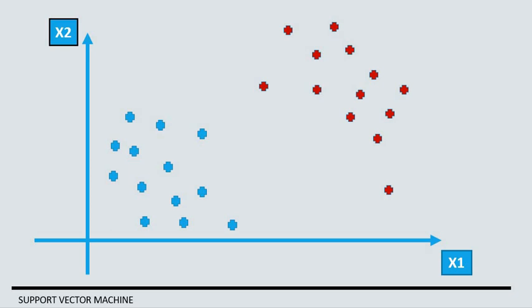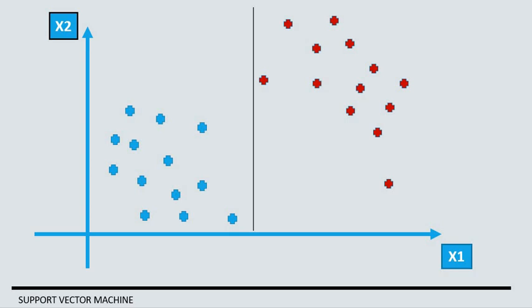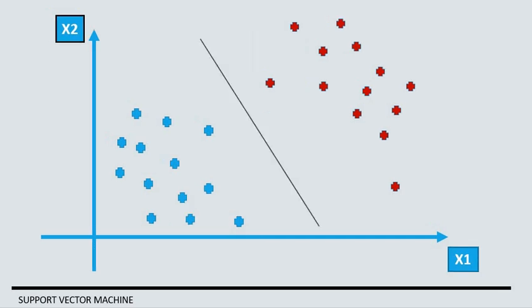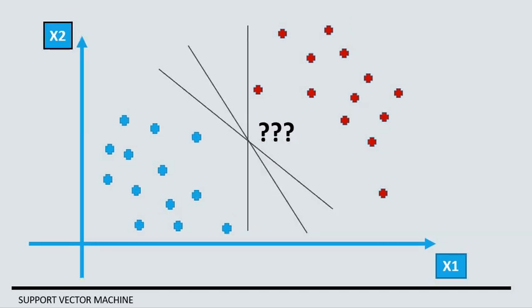But then what makes that line so special? Why can't I separate it in that way or this way? So this is our question here, which is the optimal line that can allow us to distinguish between two classes from each other?